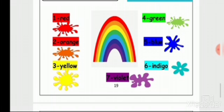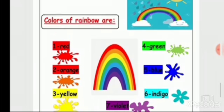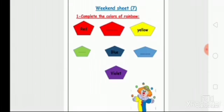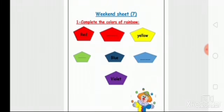Okay Junior One, now let's start to solve worksheet number seven. Open the worksheet booklet, page 15. We will complete the colors of the rainbow. Number one is already written as red, so the color after red is orange. Write orange.